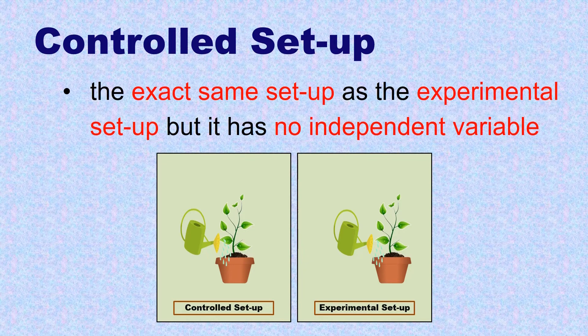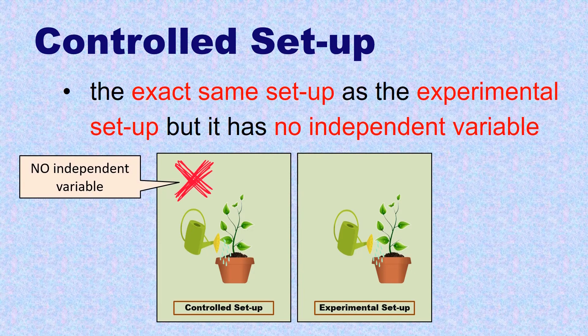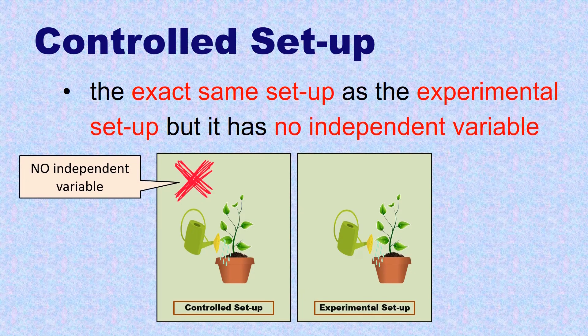The only difference is that the controlled setup has no independent variable, which is the sunlight, while the experimental setup has an independent variable.